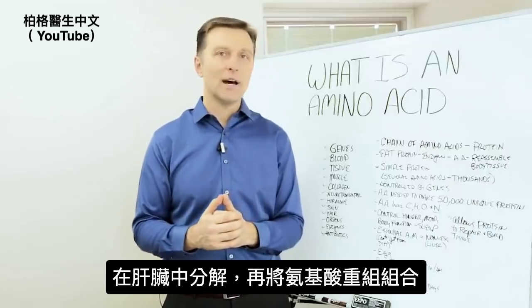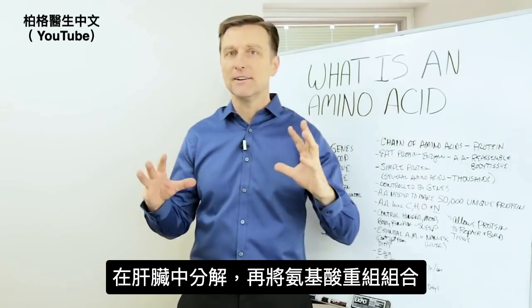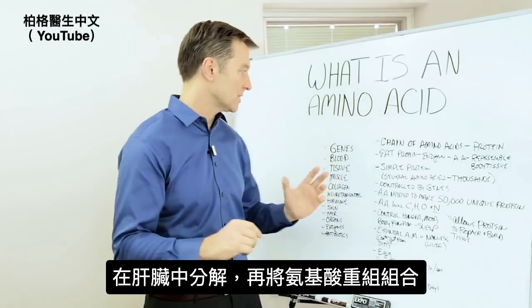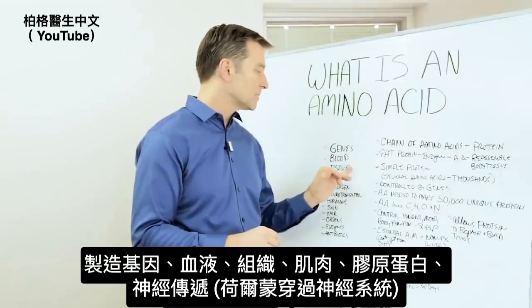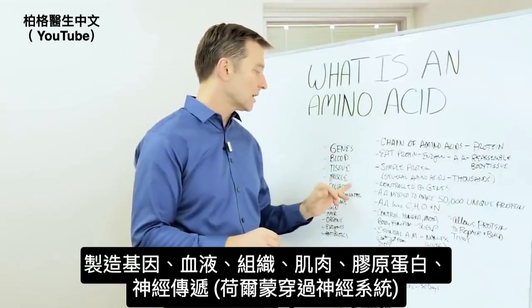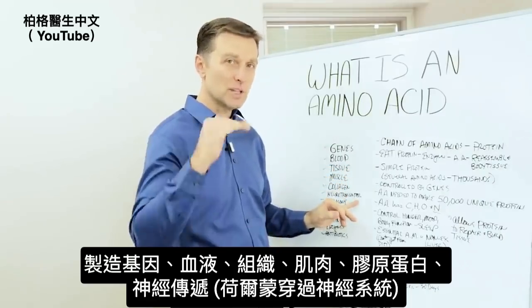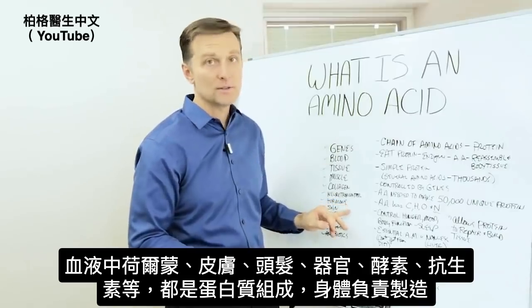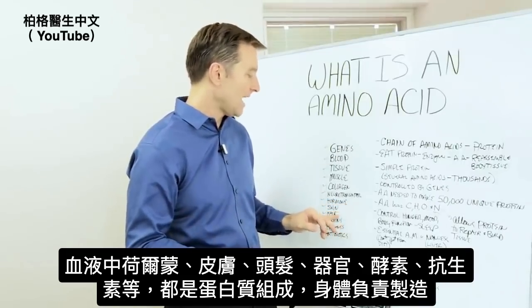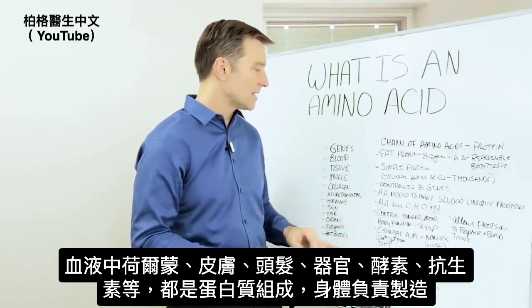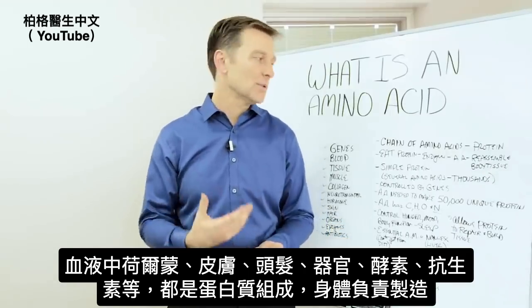Then your body tissue starts reassembling these amino acids into many different structures — making genes, making blood, tissue, muscle, collagen, neurotransmitters, hormones, skin, hair, organs, enzymes, antibodies — they're all made from protein.